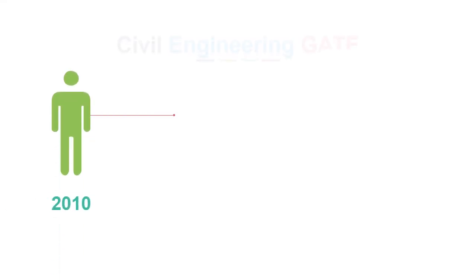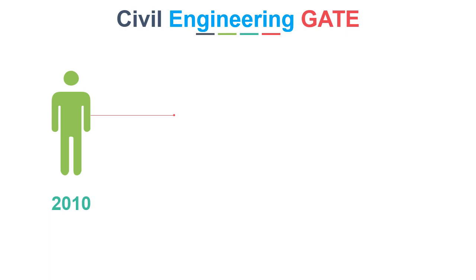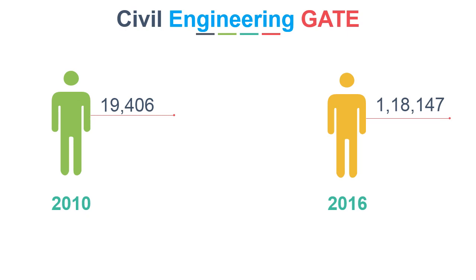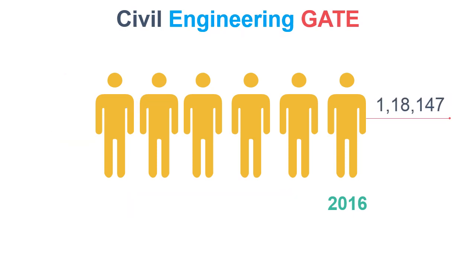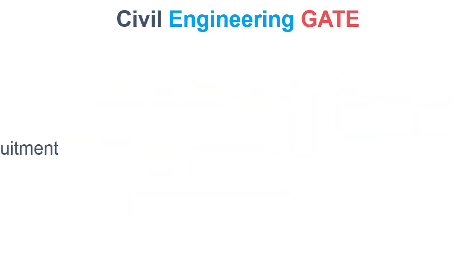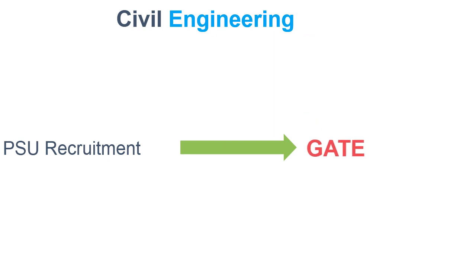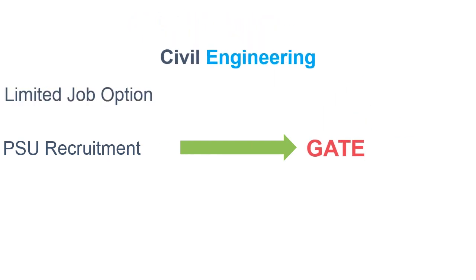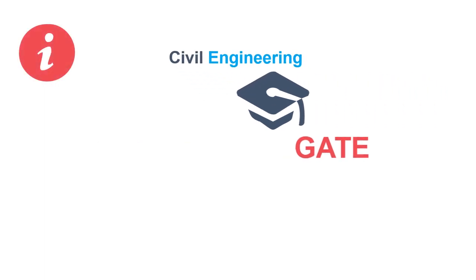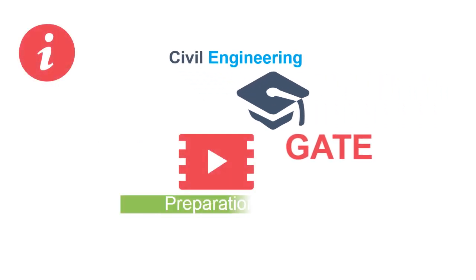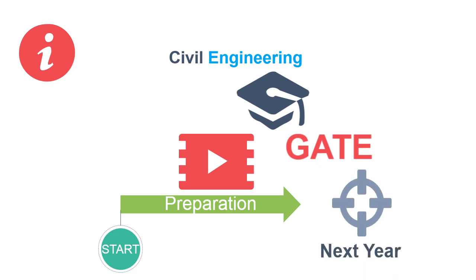In 2010, the total number of candidates in civil engineering who appeared for GATE was 19,406, and in 2016 it was 1,18,147 — numbers almost increased by 6 times in 6 years. The reason behind this massive increase is mostly PSU recruitment through GATE and very limited job options in civil engineering after graduation, which makes it crucial for students to prepare for GATE. In this video, we will discuss how to start your preparation for GATE targeting next year.